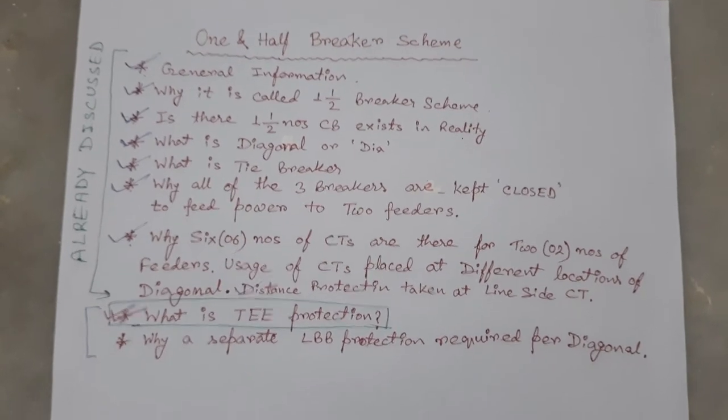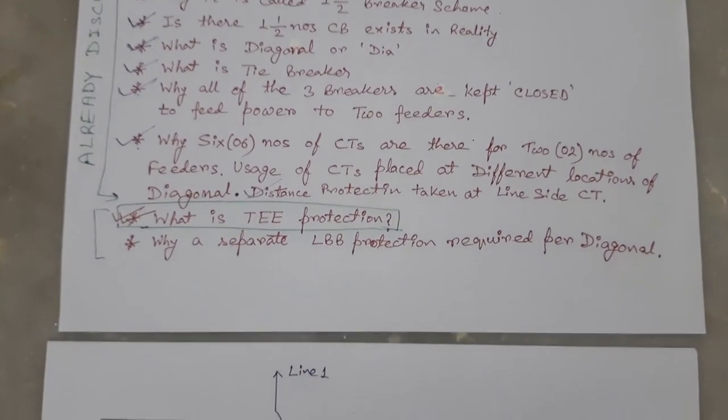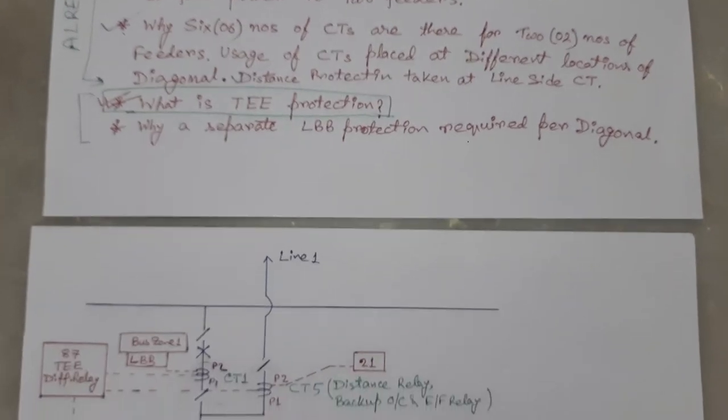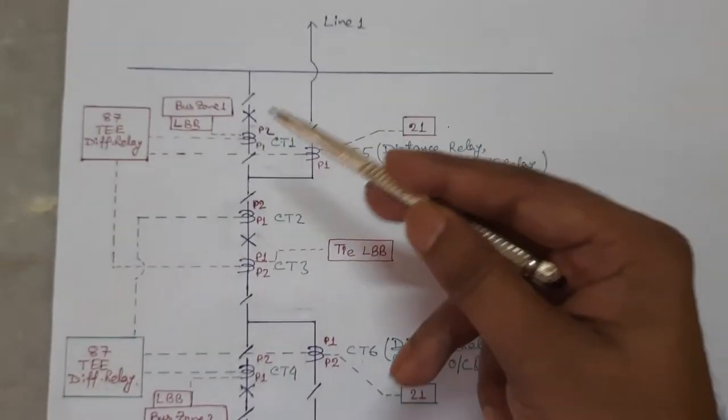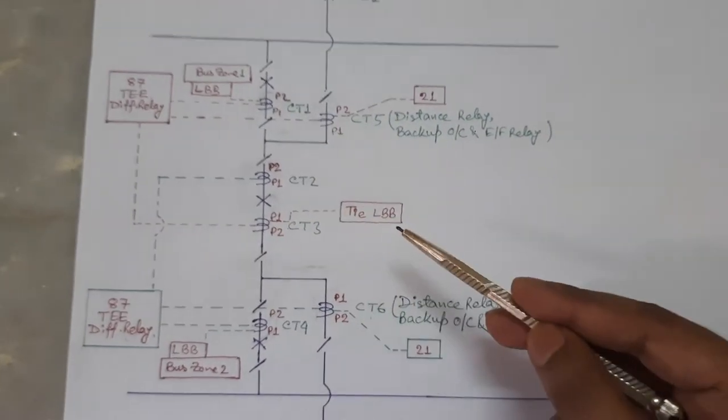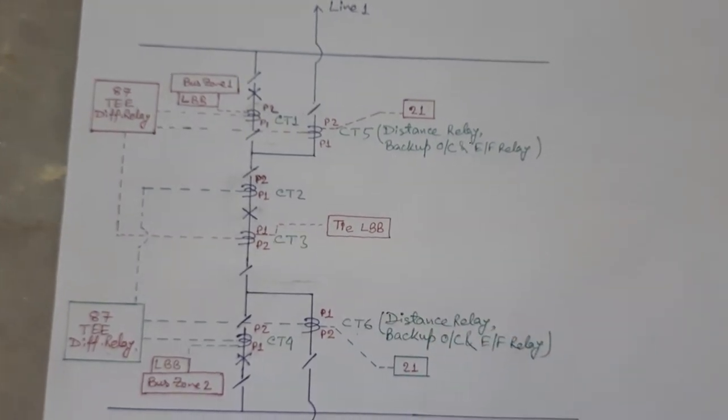In this video, we will discuss why a separate LBB protection is required in each diagonal and this LBB protection is also called tie LBB.